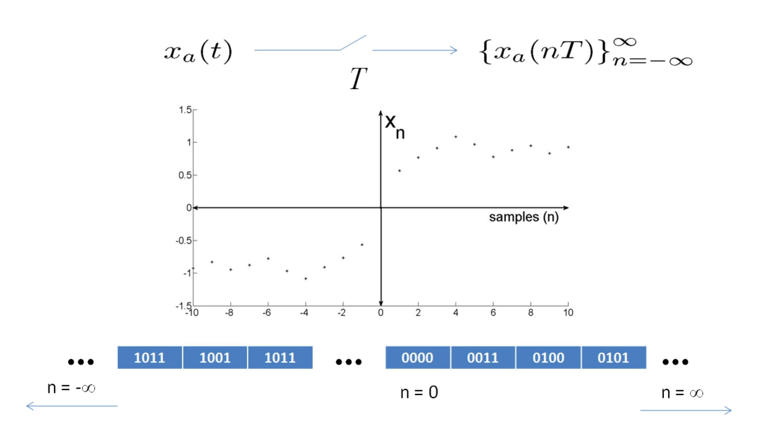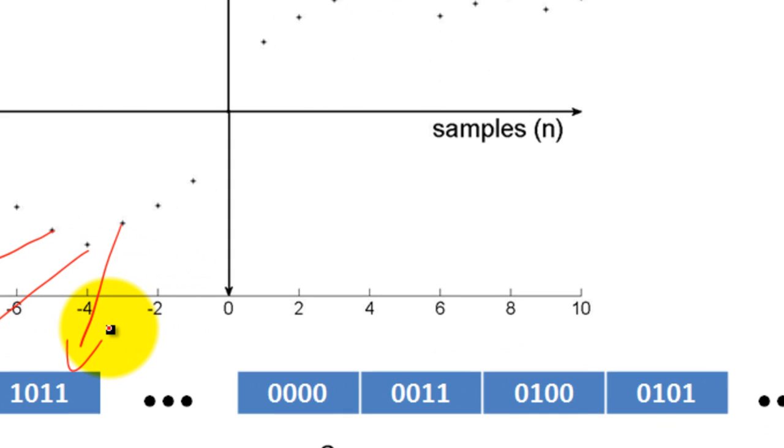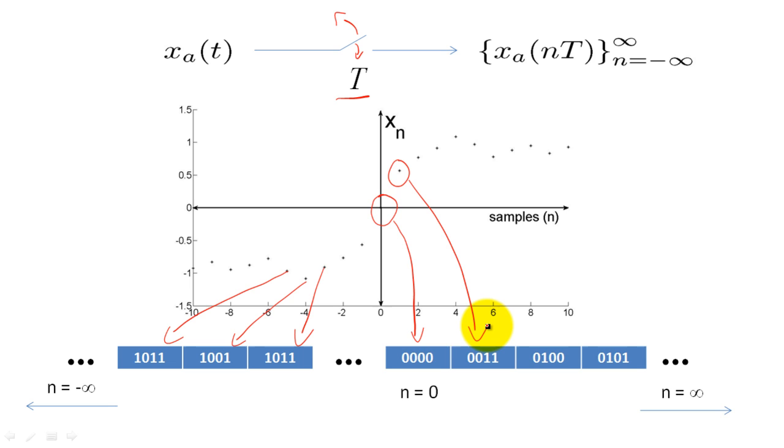This sampling process is represented schematically by a switch that opens and closes periodically with period T. Every time the switch closes, the value of X sub A of T is measured and quantized into a binary number that is stored in registers or computer memory. For example, this sample here is stored as a 0 in memory, and the next sample is stored as a 3. The values stored in memory become our discrete time signal, X sub N.